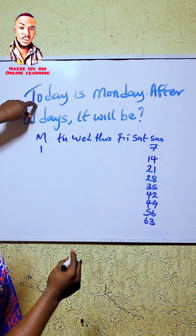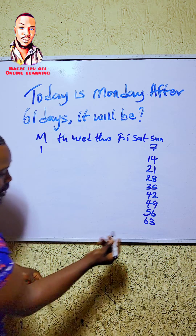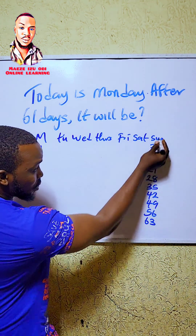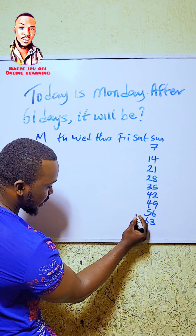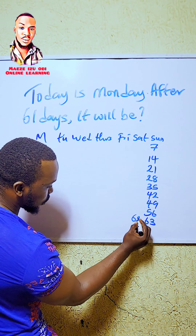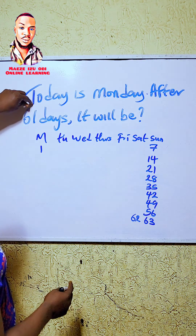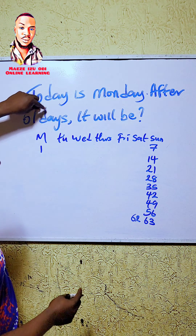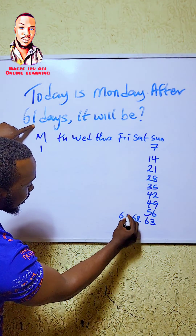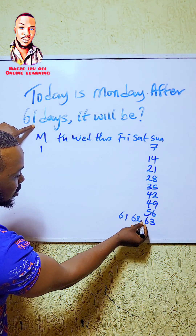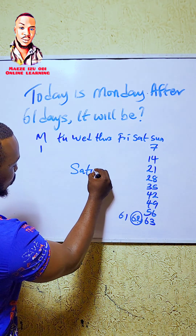But remember, they said today is Monday. After 61 days, it will be — now, that Sunday is going to be 61. The next, going back, 62. Now, 62 is for Saturday. The question said today is Monday, after 61 days. The 61st day is Friday. So the 62nd day we are looking for — the answer is going to be Saturday.